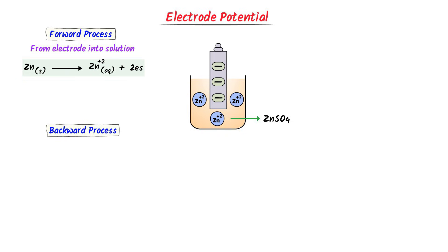In the forward process, the oxidation state of zinc is not decreasing but increasing from zero to plus two, so zinc is oxidized. Thus, in the forward process, the zinc electrode dissolves in zinc sulfate solution and a negative charge appears on the electrode.